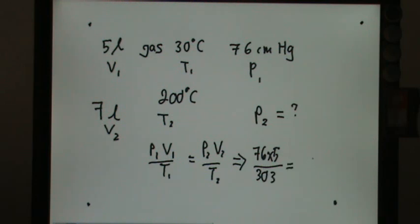Your P2 is unknown. Your V2 is 7 liters. Over 200 celsius plus 273 is 473.